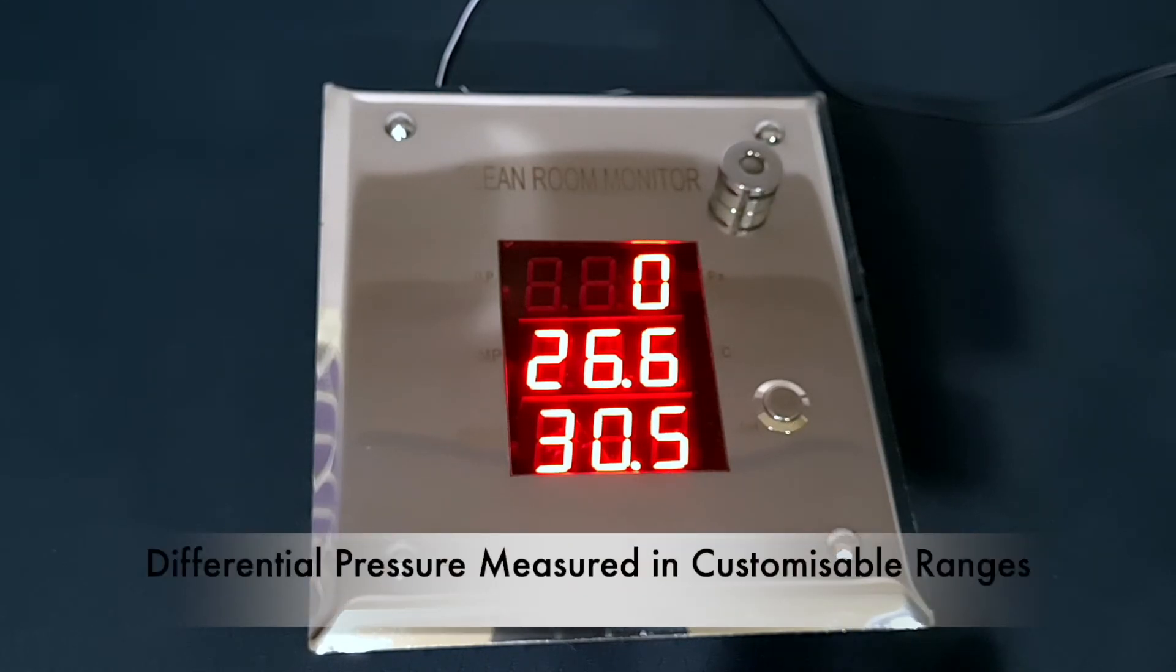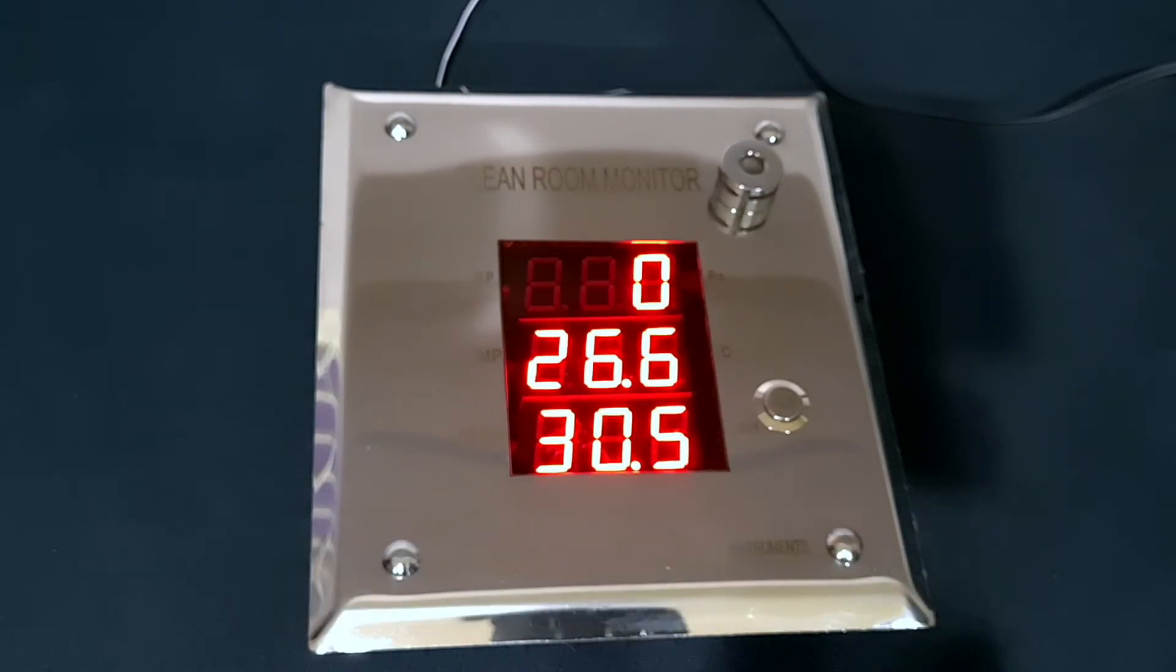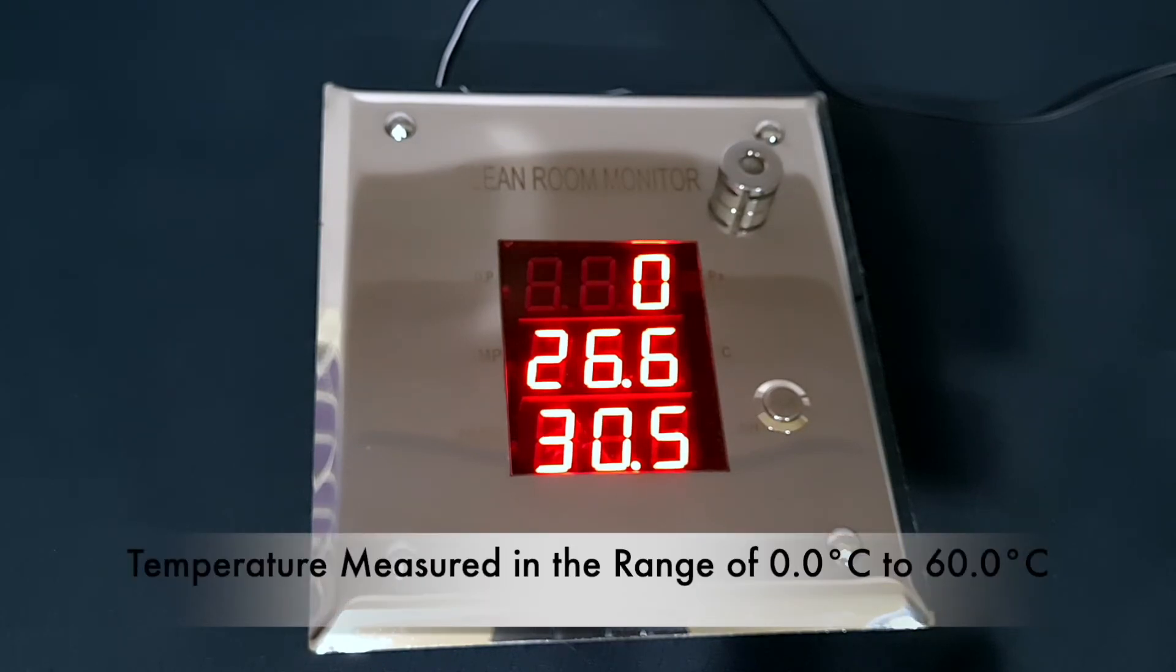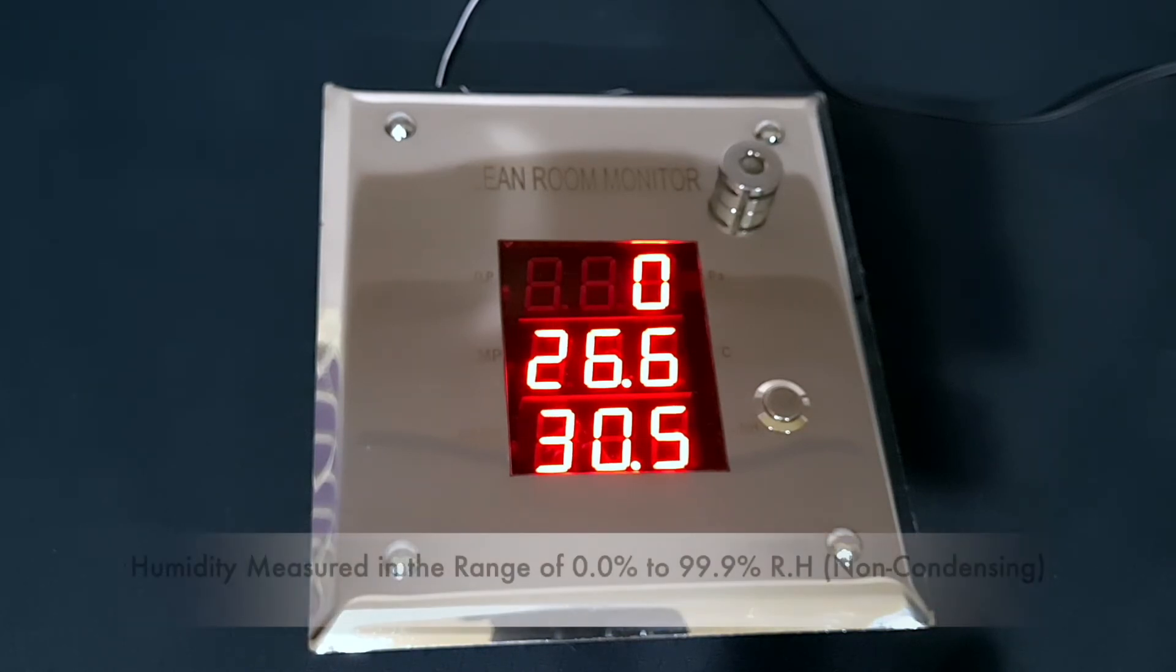The Ace Clean Room Monitor measures differential pressure in customizable ranges like 0 to 50 pascals, 0 to 100 pascals, 0 to 200 pascals, 0 to 1000 pascals, etc. It measures temperature in the range of 0.0 to 60.0 degrees Celsius and humidity in the range of 0.0 to 99.9% RH, that is 99.9% relative humidity non-condensing.